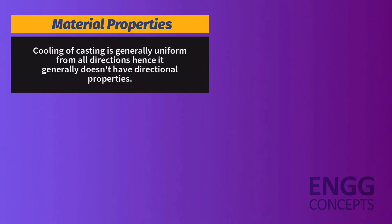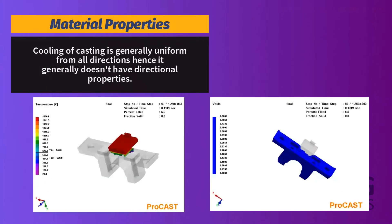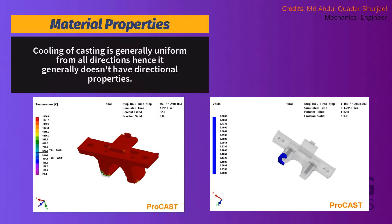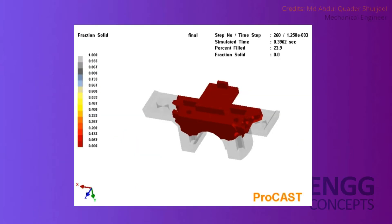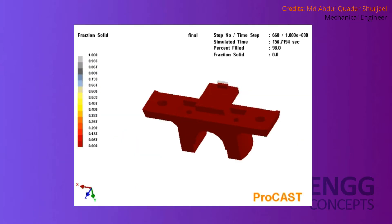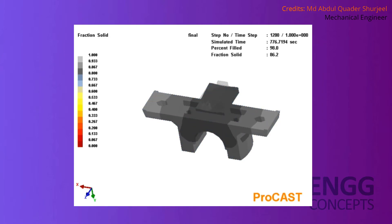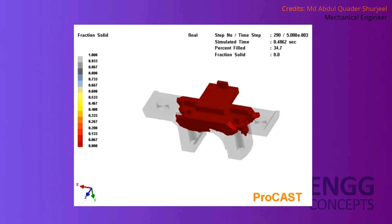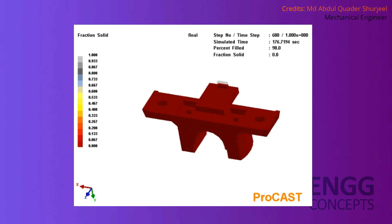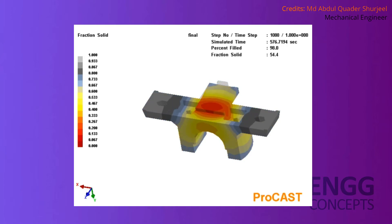Regarding material properties, cooling of a casting is generally uniform from all directions, so it generally does not have directional properties. The directional solidification of a casting can be seen in this simulation, where solidification occurs from the farthest end of the casting and works its way towards the top of the casting.